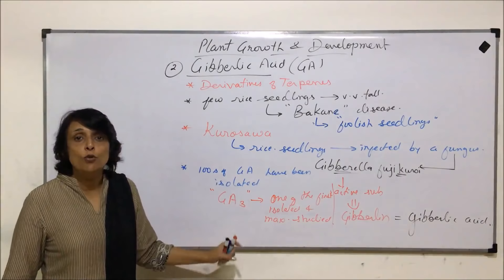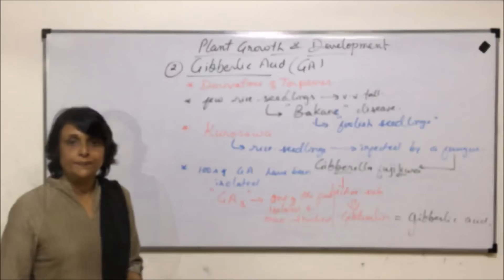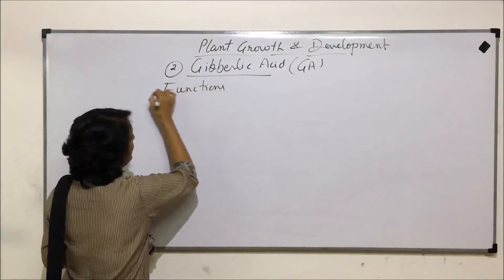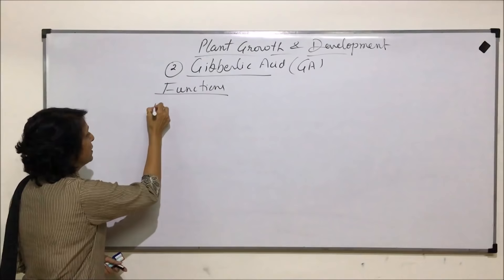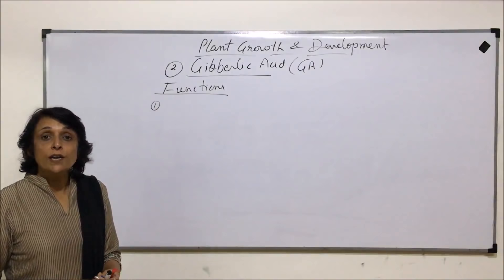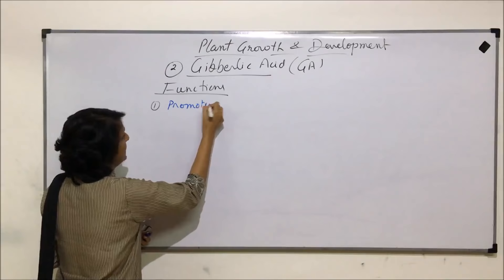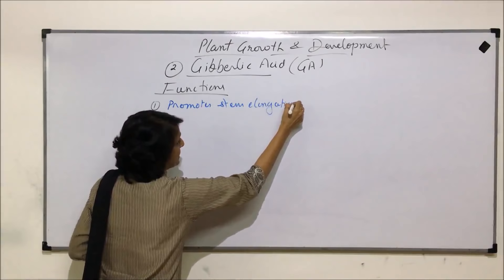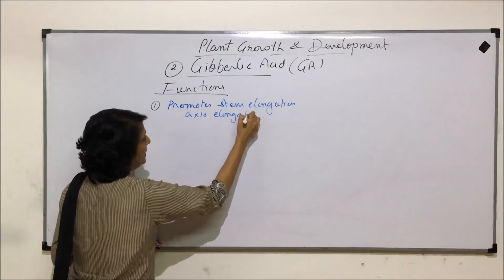Now let us talk about the functions of gibberellins and how we can use those functions for our benefit under applications. The first and most important function is that it promotes elongation of the stem — also called axis elongation.